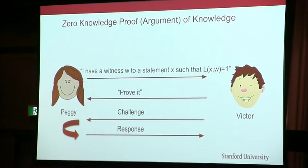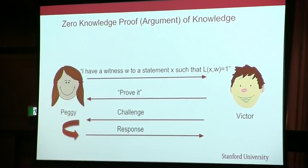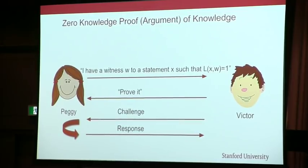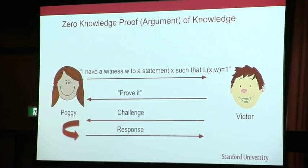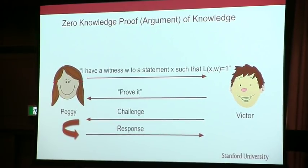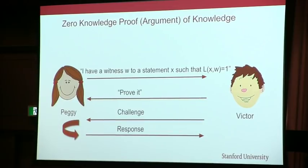On a very simple level, the statement could be a Sudoku, and the witness could be the solution to the Sudoku. You can say you know a solution to that Sudoku such that the Sudoku has a solution. Not every Sudoku has to have a solution, but you give no information whatsoever about what the solution actually is.